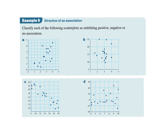Let's do some practice. Classify each scatterplot as exhibiting a positive, negative, or no association. The first one — positive, yes. The second one, B — no association, correct, it would have an R value of zero. We call that no association or no relationship — either the word relationship or association can be used. C is negative. D — I'd say no association as well. When you're given only the scatterplot, we can generally say 'it appears' to be no association.